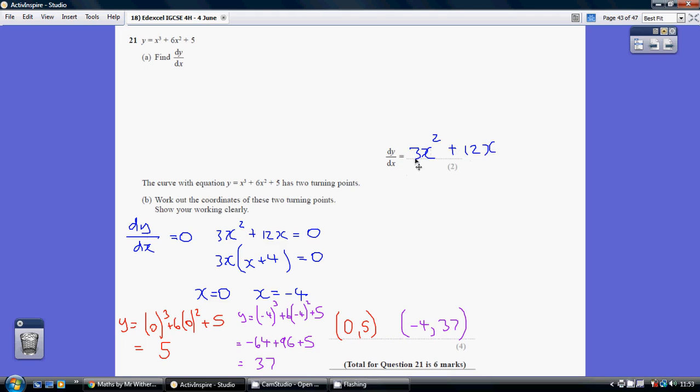So we're solving where this equals 0. So 3x squared plus 12x equals 0. Fully factorizing, we've got 3x, open bracket, x plus 4 equals 0.